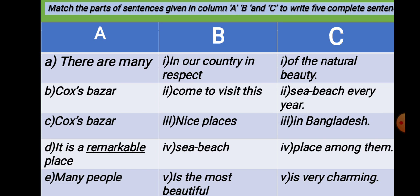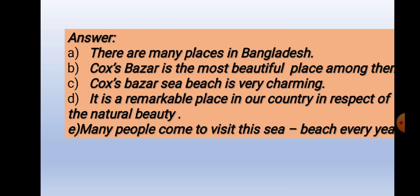Now you see how you have to answer matching. You have to write the answer in this way. Answer A: There are many places in Bangladesh. B: Cox's Bazar is the most beautiful place among them. C: Cox's Bazar's sea beach is very charming. D: It is a remarkable place in our country in respect of the natural beauty. E: Many people come to visit this sea beach every year.